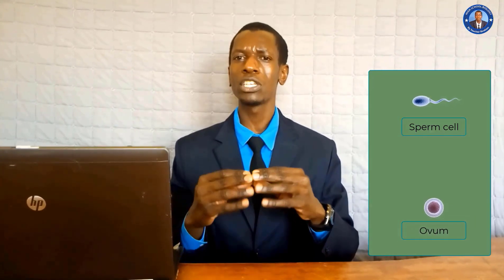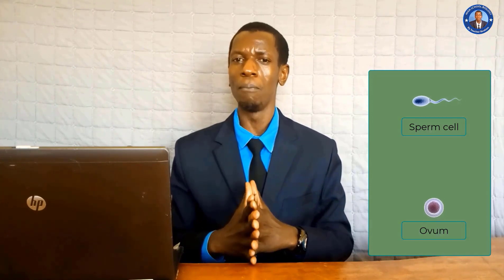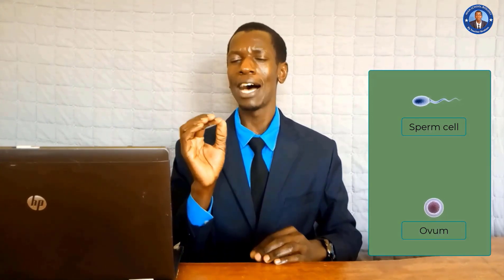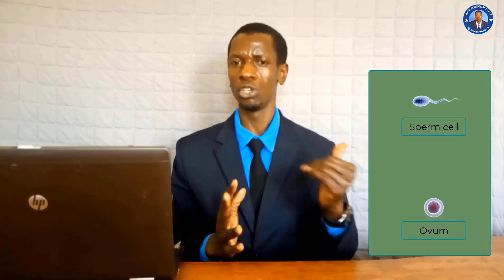Meiotic cell division occurs in gametes. Male gametes are called sperm cells while female gametes are called ova — singular: ovum. In these gametes, the process of cell division takes place, resulting in formation of daughter cells which have half the number of chromosomes as the parent cells. Gamete formation can cause variation in two ways: a process called crossing over, and another process called independent assortment.